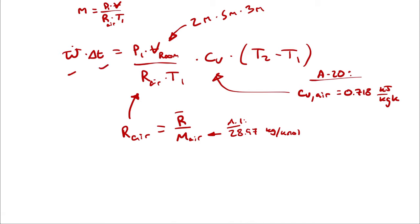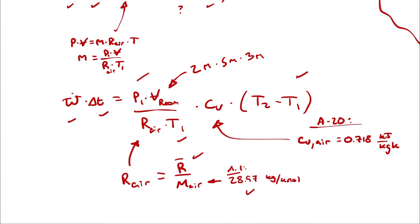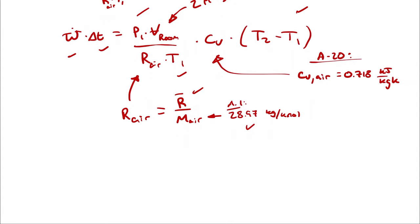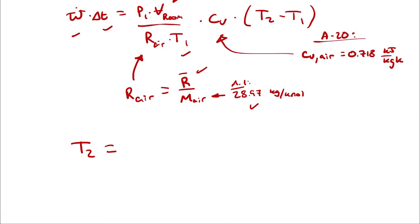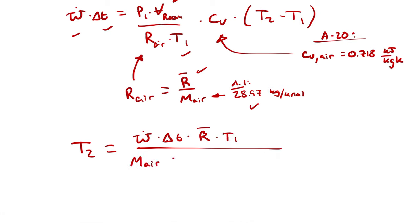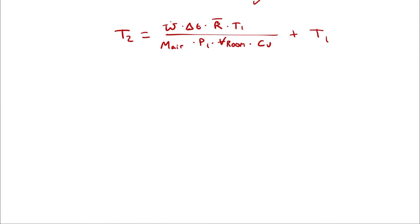Now I think we know everything: duration, power, pressure, temperature, and the specific gas constant as two known quantities. The volume is given in terms of three dimensions. Solving for T2 is just a matter of doing some algebra and then some arithmetic. Rearranging, T2 equals power times duration times universal gas constant times T1, divided by molar mass of air times P1 times volume of the room times Cv of air, and then plus T1.